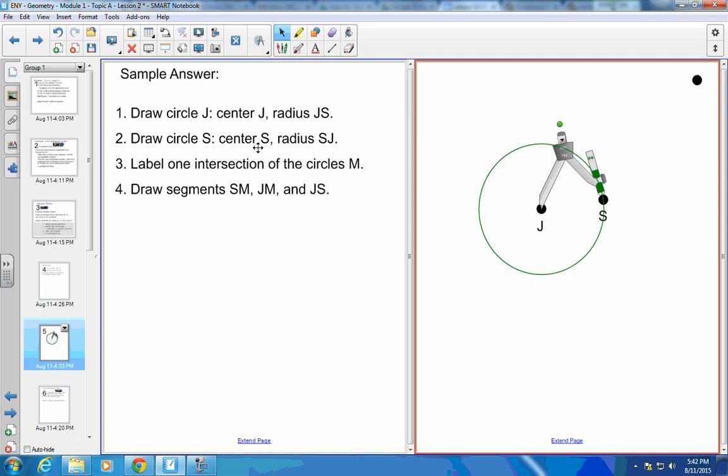Draw circle S, center is S, radius is SJ. So if I draw circle S, my point of my compass goes on S, and I shouldn't have to adjust it because SJ and JS are in fact the same measures. So they are considered congruent. They are in fact the exact same segment.